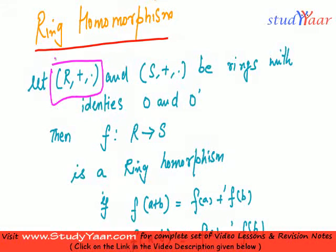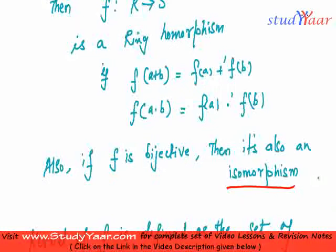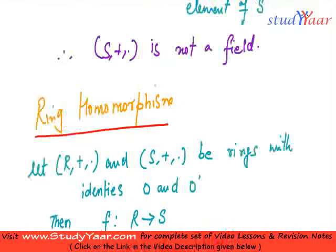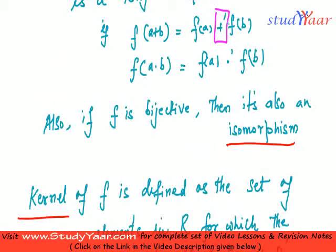A function from R to S is called a ring homomorphism if we have f of a plus b is equal to f of a plus operation for ring S, plus dash fb, and f of a dot b is equal to f a dot dash fb.